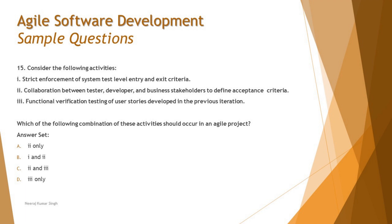It's not necessary that all three activities should happen, because the options sometimes say only the second or only the third. Please don't be driven by the word 'combination' into thinking that only pairs like one-and-two or two-and-three can be the answer. The word 'which of the following combination' simply means: from the given four options, which one is right?